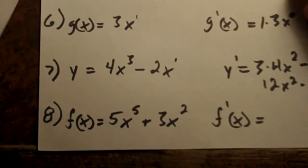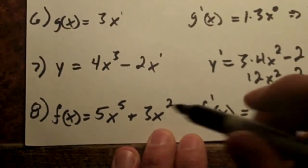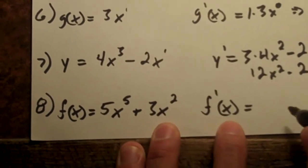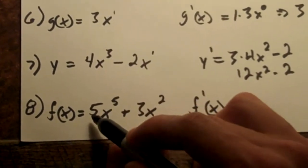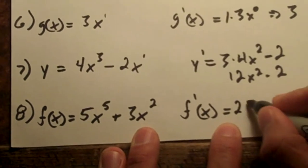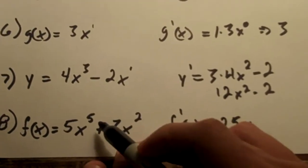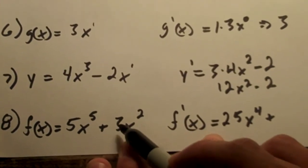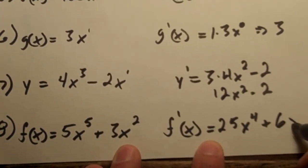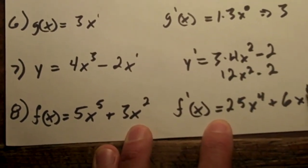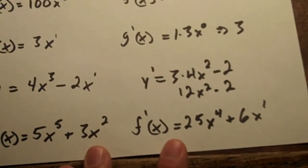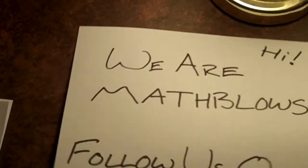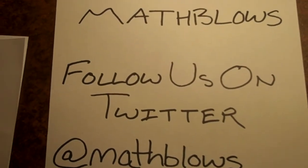Last one. Same sort of deal. Just a different notation as usual. 5 times 5 is 25, x, and then 5 minus 1 is 4. Plus, 2 times 3 is 6, x, 2 minus 1 is 1. And that's it. Now you know how to do simple derivatives.